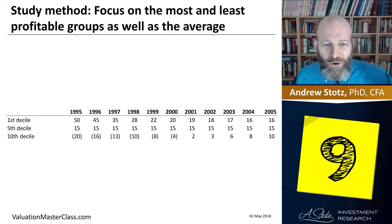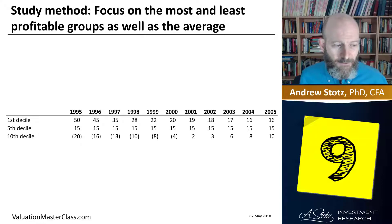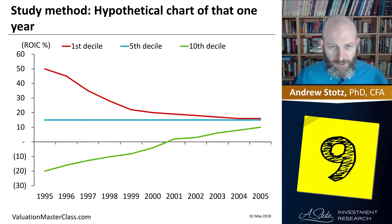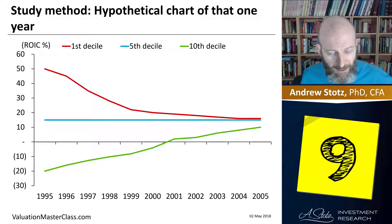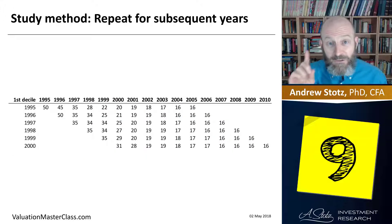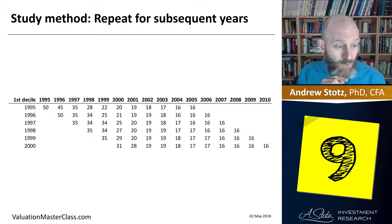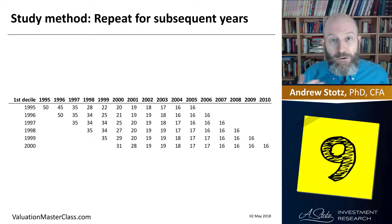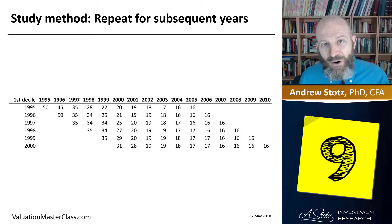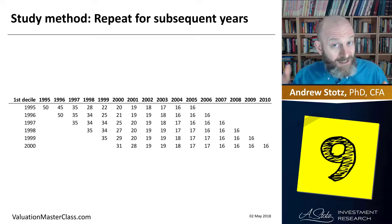We don't need to look at all the different deciles — just the first, the fifth (which is the average), and the tenth. In theory, high ROIC fades down and low ROIC fades up. But that was just one year — 1995. So we go to 1996 and do the exact same study, then 1997, and on and on, as far as we can go while still having 10 years of forward data. From that, we get a full table.